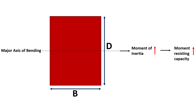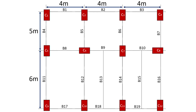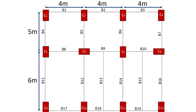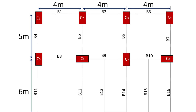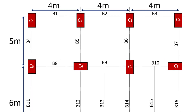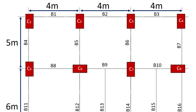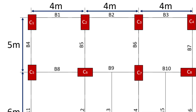To make it easy, let's consider a column layout with the assumed orientation of columns, as you can see in this picture. The width of each column is 230 mm, depth of each column is 300 mm, and the width of each beam is 230 mm.